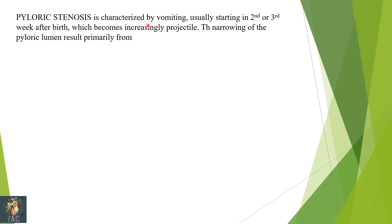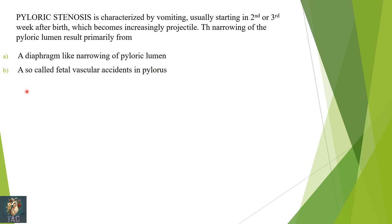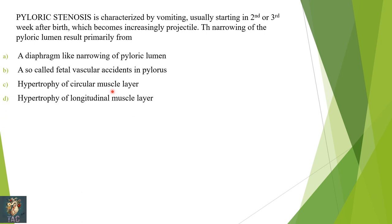The next MCQ: pyloric stenosis is characterized by vomiting usually starting in the second or third week after birth, which becomes increasingly projectile. The narrowing of the pyloric lumen results primarily from — diaphragm-like narrowing, fetal vascular exceedance in pylorus, hypertrophy of circular smooth muscle cells, hypertrophy of longitudinal smooth muscle cells, or persistence of the solid stage of pyloric development?